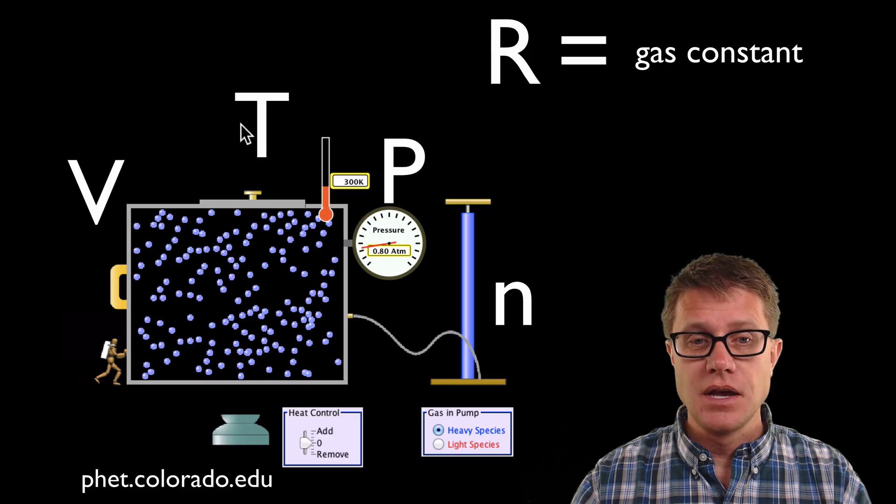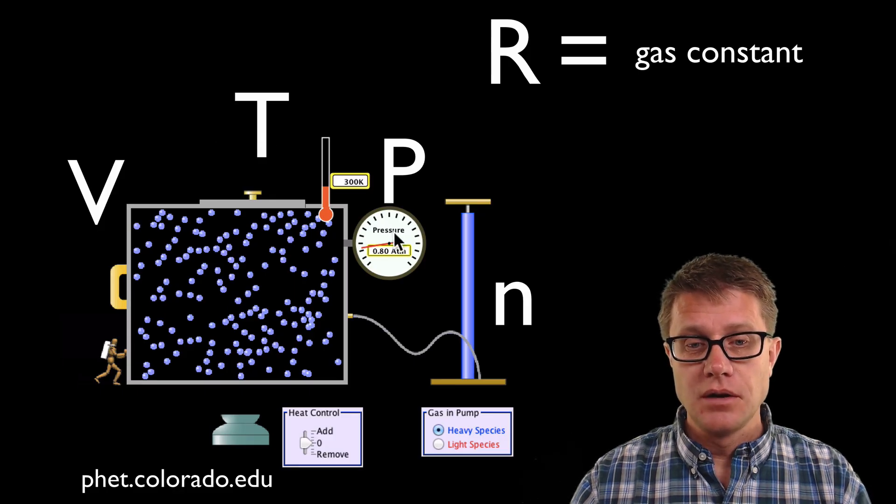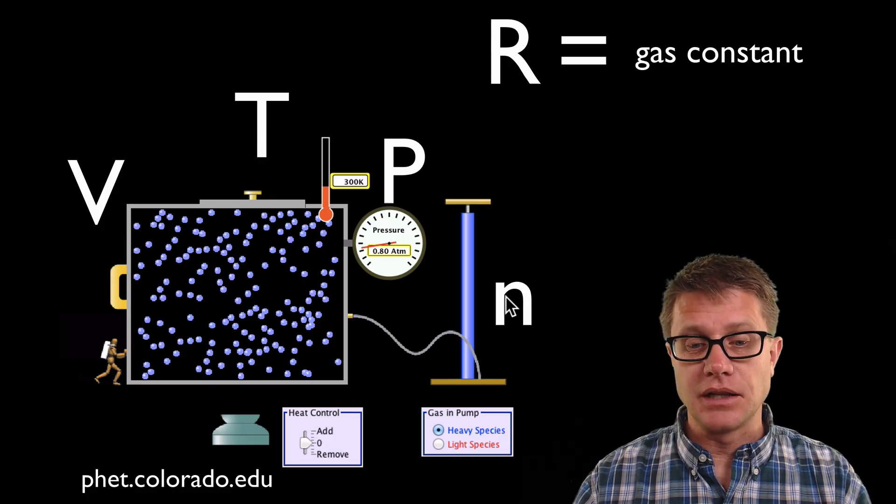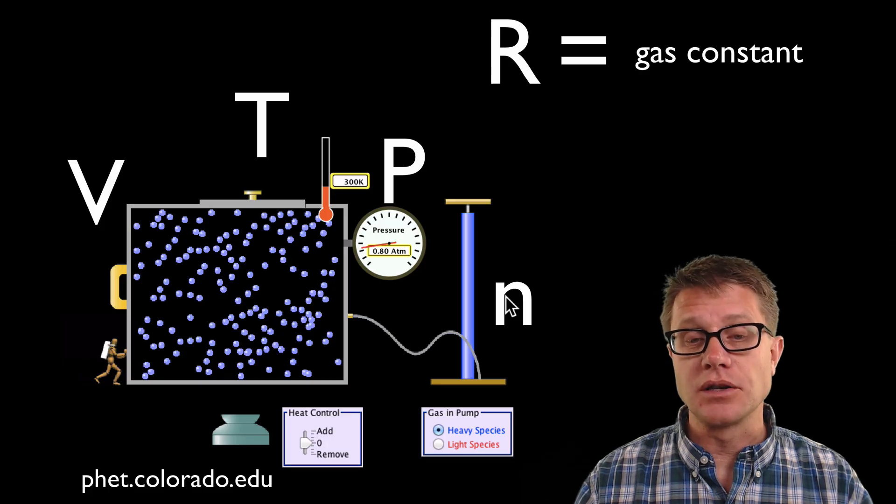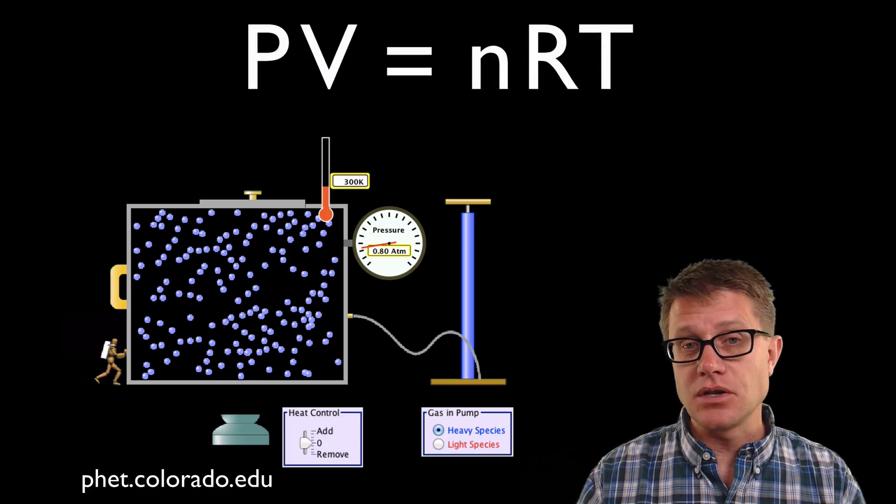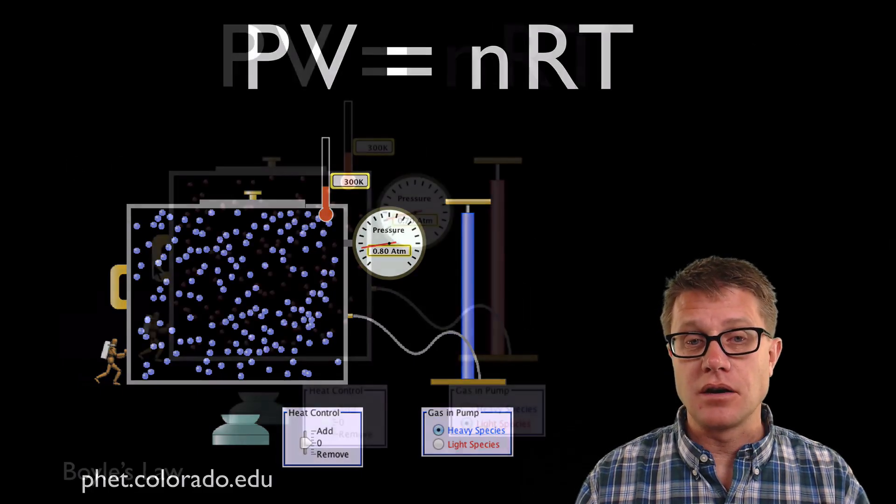R is the gas constant. But what is neat about this simulation is you could measure the volume. That is how big the container is. The temperature we have got a thermometer. We have got a pressure gauge on the side. And then finally we have N which is going to be the number of molecules that we are adding. And so here is the relationship. PV equals NRT.